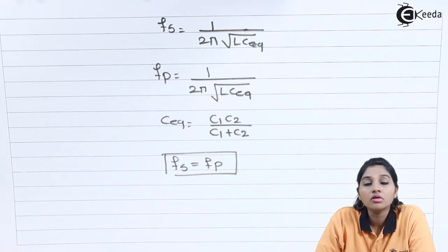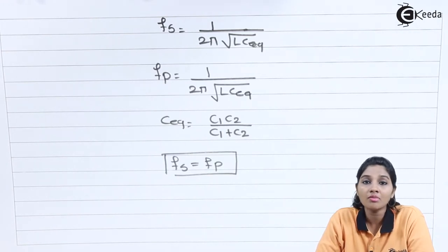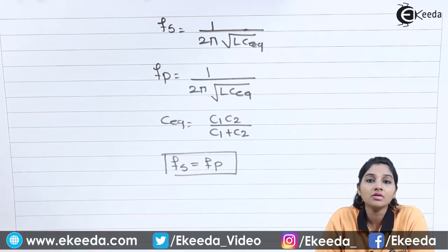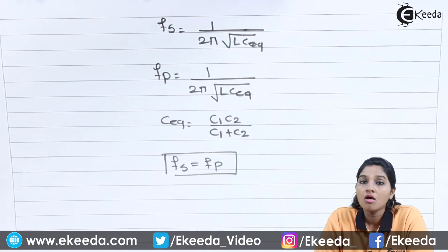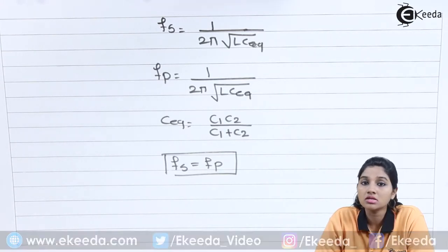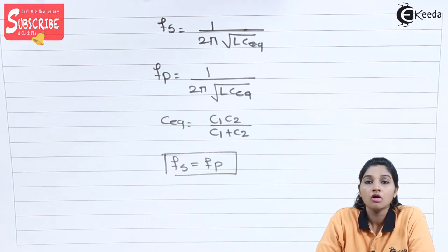So the electrical equivalent circuit of a crystal oscillator consists of one branch having a series connection of R, L, and C1, connected in parallel with another branch consisting of only capacitor C2. When there are no vibrations, the circuit is similar to C2, and when the AC signal is applied and the crystal is vibrating, it is similar to the RLC1 circuit.